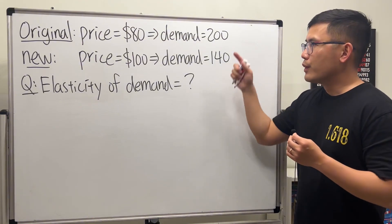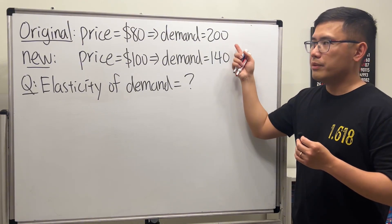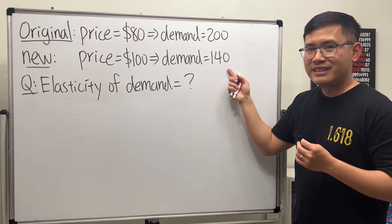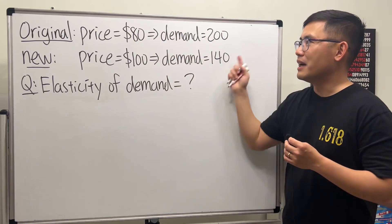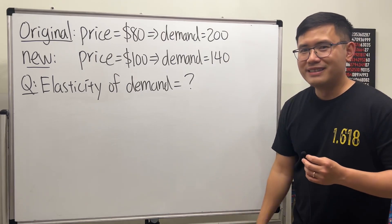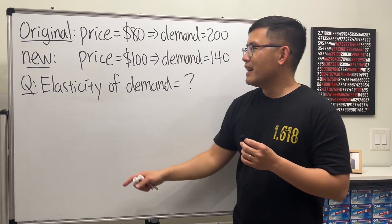By the way, which situation do we make more revenue? The first one, right? Because you can just do this times this, compare with this times that. So don't increase the price. But anyway, we are going to see how to find the elasticity of demand in this situation.